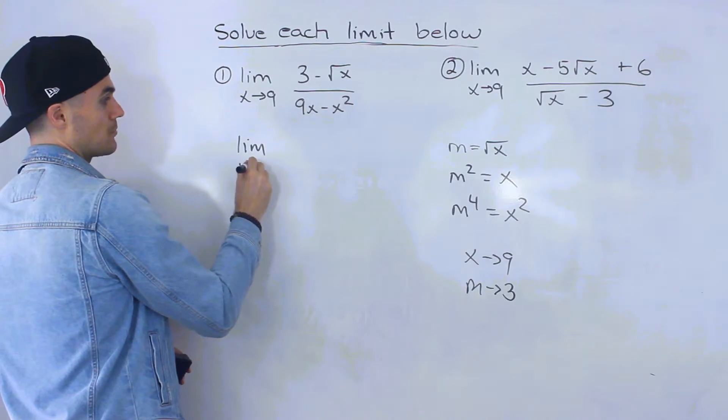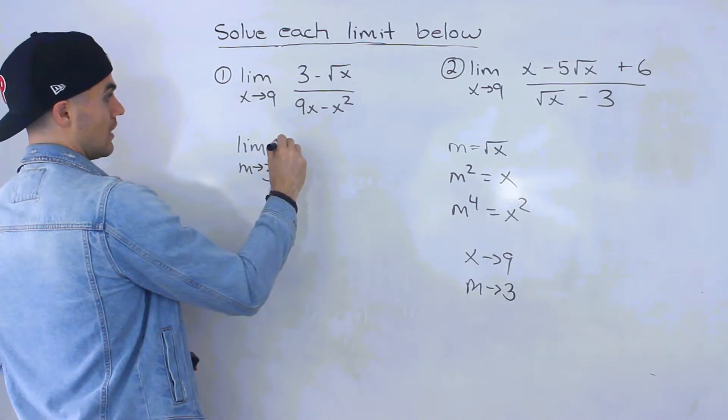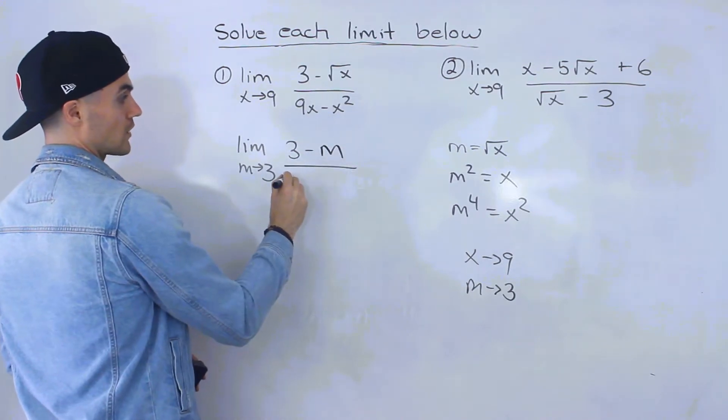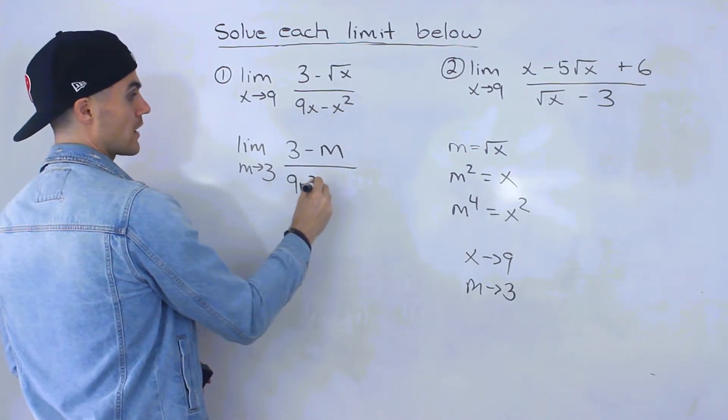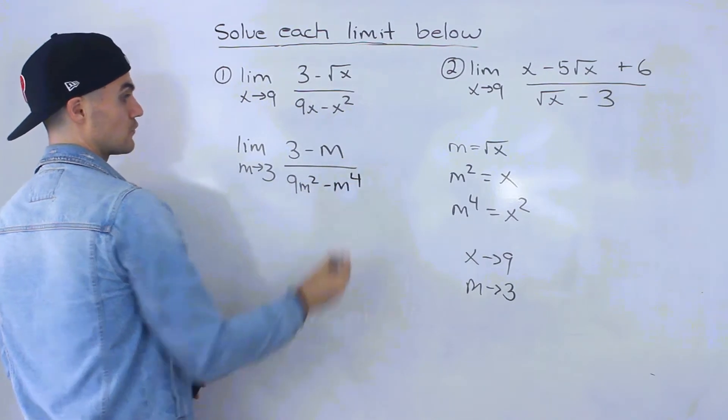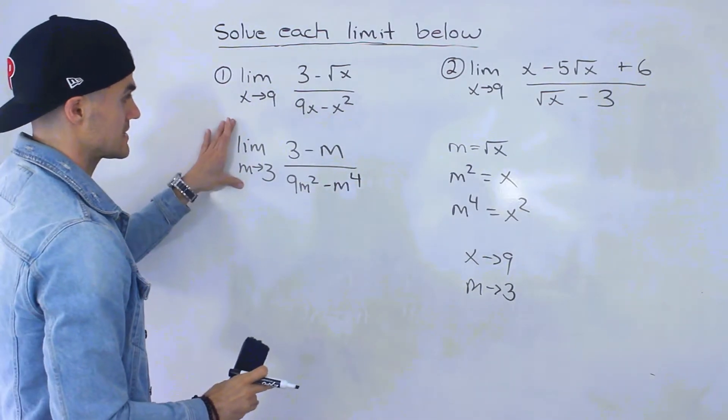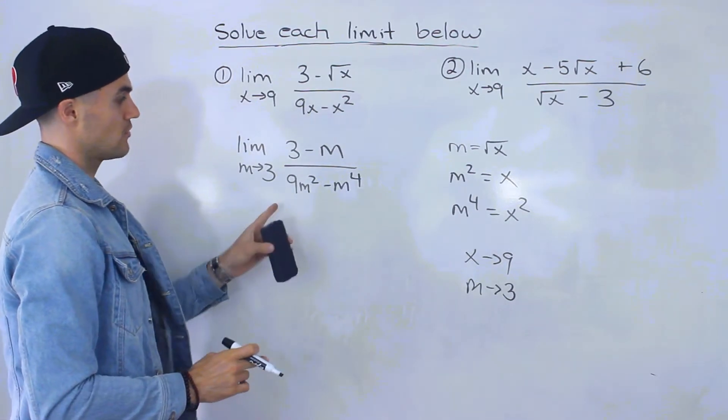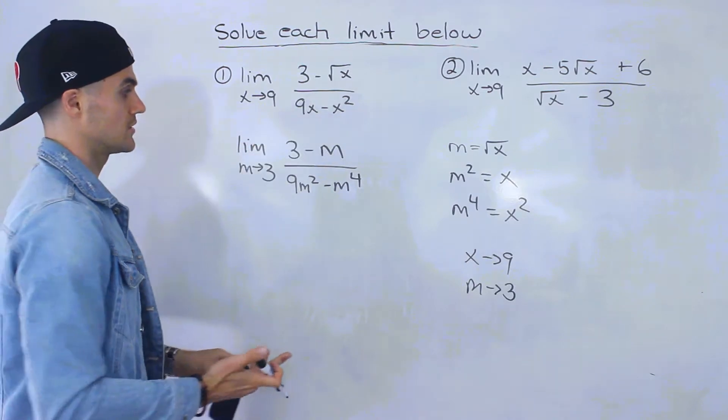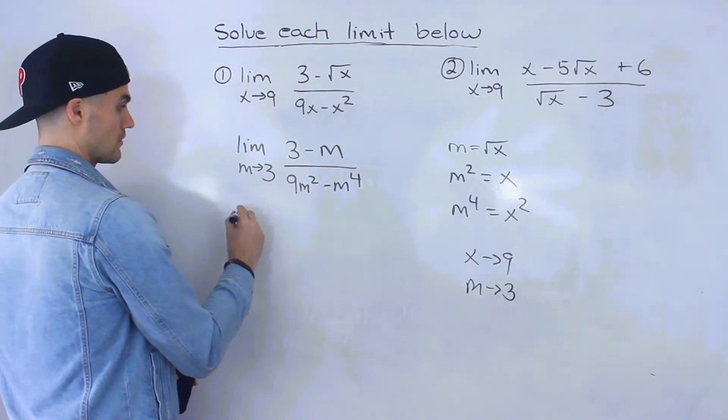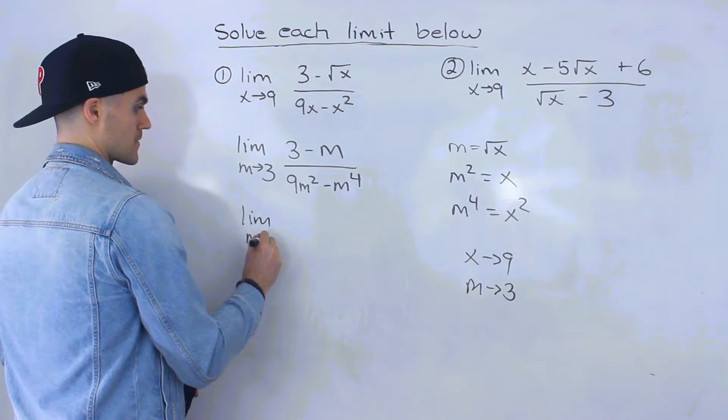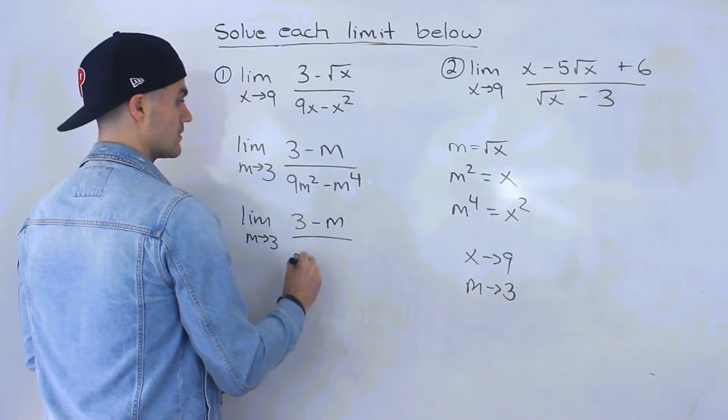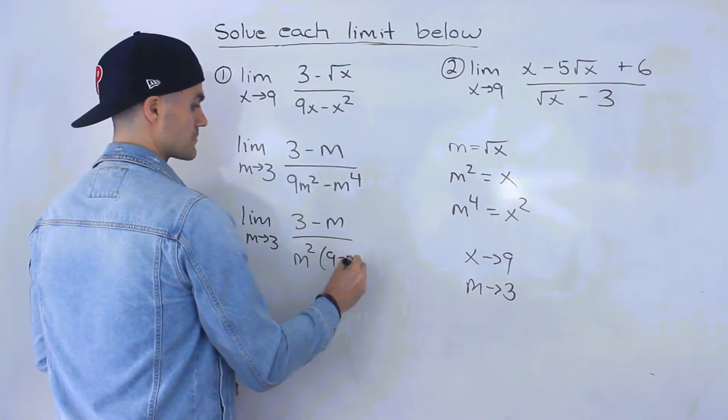We'll have the limit as m approaches 3 of 3 minus m over 9m squared minus m to the 4. This limit and the original are the exact same thing. What's nice about this one is there's no square roots to deal with. We can just factor the bottom.